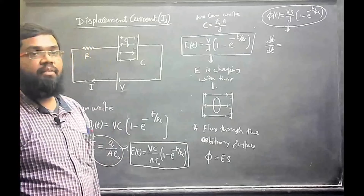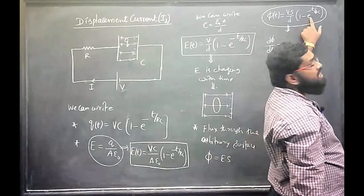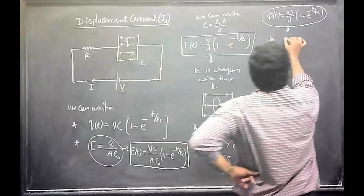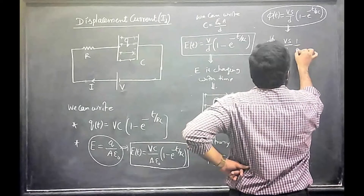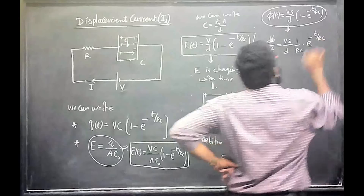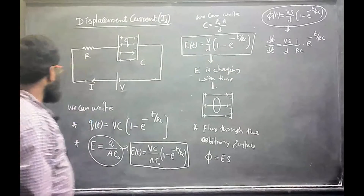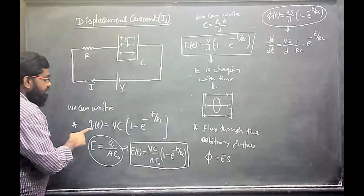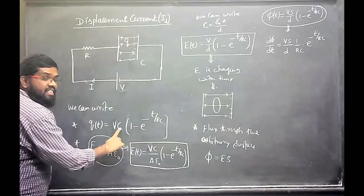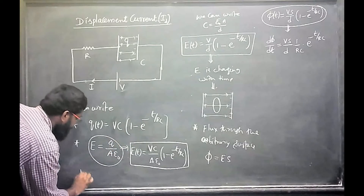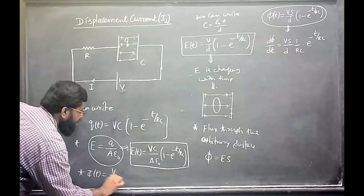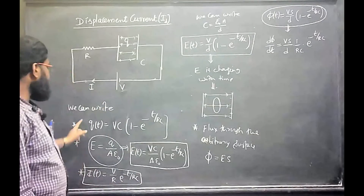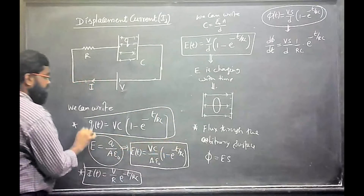Now determine d(phi)/dt. Taking the differentiation, the constant term (1 - e^(-t/RC)) differentiates to (1/RC) * e^(-t/RC). Substituting, d(phi)/dt = (V * S) / (d * RC) * e^(-t/RC). Comparing with the current equation, differentiating the charge equation dQ/dt gives i(t) = (V/R) * e^(-t/RC). This is the current equation in the circuit.